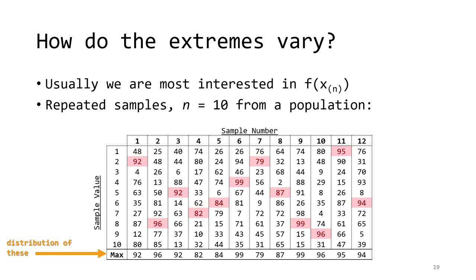Previously, we dealt with the variability of the cumulative probability for the sample maximum. Here, we will look at the variability in the value of the sample maximum. This table shows 10 samples, each of size 10, from some population. Each column is a sample. We see the sample maximum highlighted in red for each column. Then we record the sample maximum value in the last row.